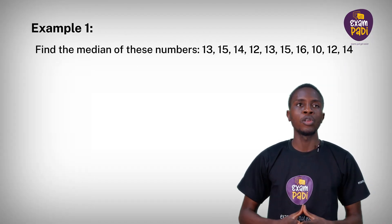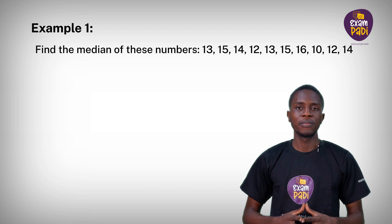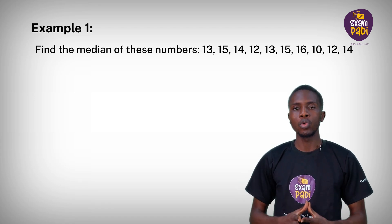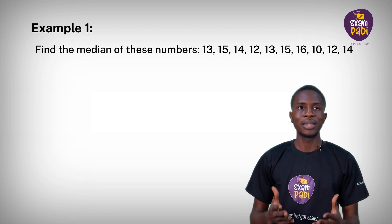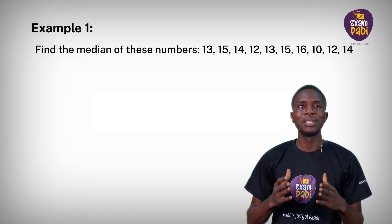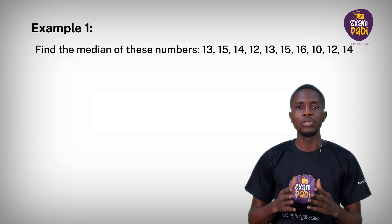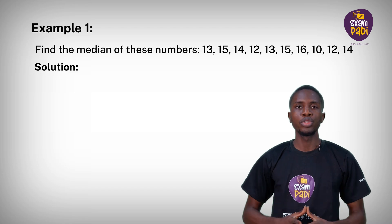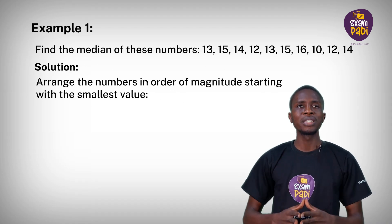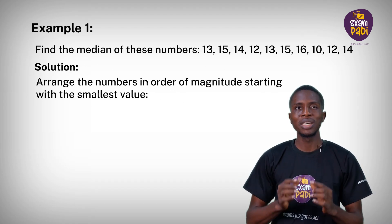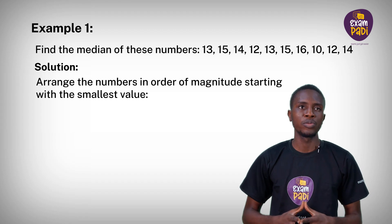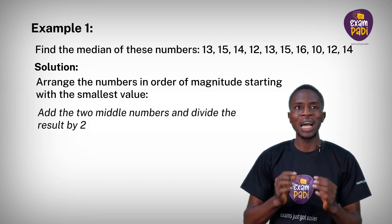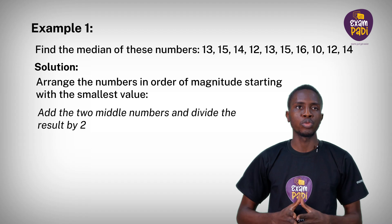Example 1: Find the median of these numbers: 13, 15, 14, 12, 13, 15, 16, 10, 12, and 14. Solution: arrange the numbers in order of magnitude, starting with the smallest value. Add the two middle numbers and divide the result by 2.